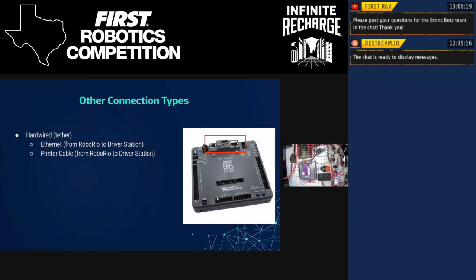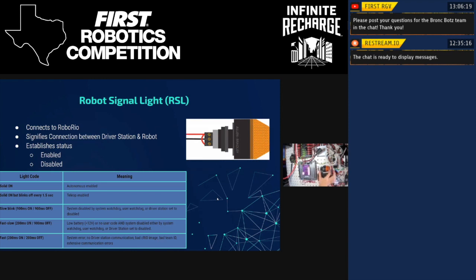All right, so moving on. Next thing is the robot signal light. So the robot signal light connects to the Robo Rio. And basically it not only signifies a connection between the driver station and the robot, but it also talks about what state your robot is in. So if you understand, so this table that's at the bottom here, and that's all, you can look that up if you Google the robot signal light for FRC. This entire table will come up and we just snag that off of the manufacturer's website. But if I'm sitting in the bleachers at an FRC competition, and I see that there's something wrong with the robot, the first thing I will do is as I'm sitting there in the bleachers, I will look out at the robot signal light on that robot, because it's bright enough to where you can see it from the stand.